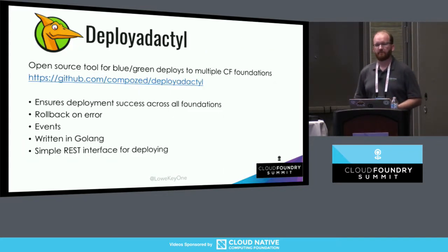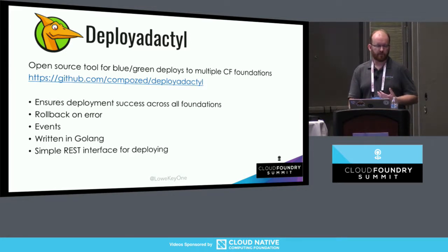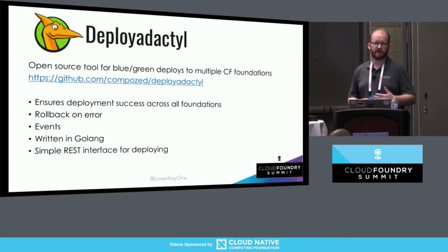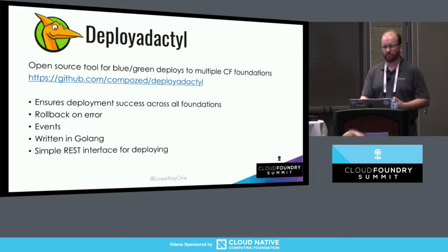Allstate ran into this basic problem as soon as we started saying we really need multiple AZs for availability reasons. So we built out a tool called DeployDactyl that's an open source tool. It does blue-green deploys across multi-availability zones. We wrote it in Go, and we recognized that every enterprise has their own custom deployment scenarios and deployment logic they want to have. So we put in an event model so you can hook into that and write your own wrappers to do whatever's appropriate for your enterprise. We've done that, and I'll talk more about what we've done that's Allstate-specific later.